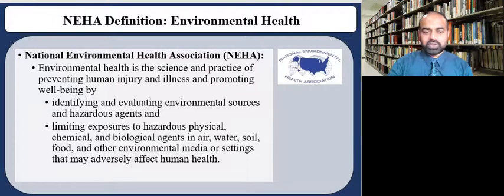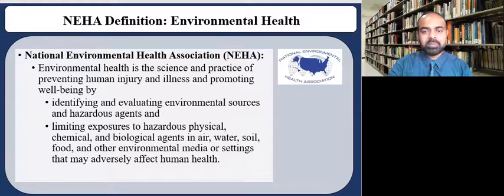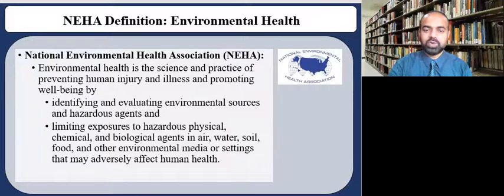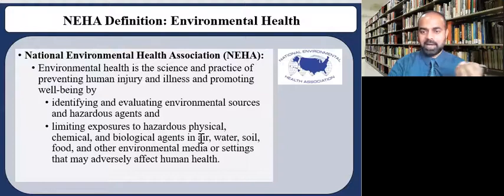The National Environmental Health Association, which is a professional organization for environmental health professionals in the United States, also has a definition for environmental health. Environmental health is the science and practice of preventing human injury and illness and promoting well-being by identifying and evaluating environmental sources and hazardous agents and limiting exposures to hazardous physical, chemical, and biological agents in air, water, soil, food, and other environmental media or settings that may adversely affect human health. Here we see those terms again — physical, chemical, and biological agents — and also where these agents are present: in the air, water, soil, food, or other environmental compartments or media.